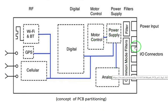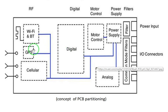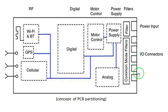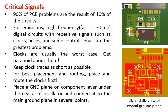Proper PCB partitioning will minimize trace length and as a result reduces radiated emission because you have smaller loops. Here is an example of PCB partitioning: digital circuits, motor driver, and power supply with input power and I/O cables on one side; Wi-Fi, Bluetooth, GPS, and cellular on the other side. The PCB is partitioned into RF, digital, motor control, power supply, and I/O sections, with all I/O cables on just one side of the PCB to reduce common-mode radiation.